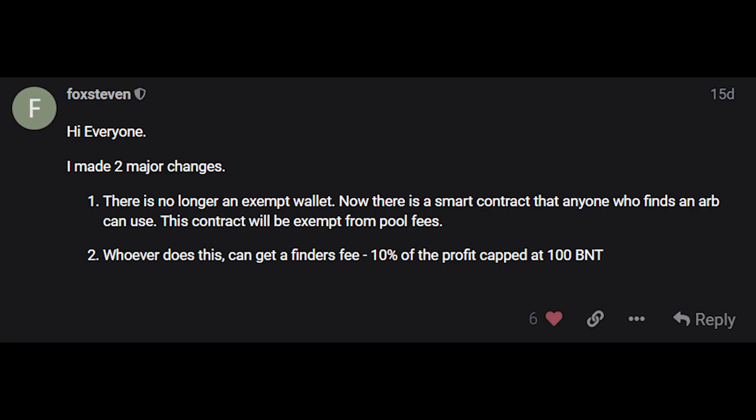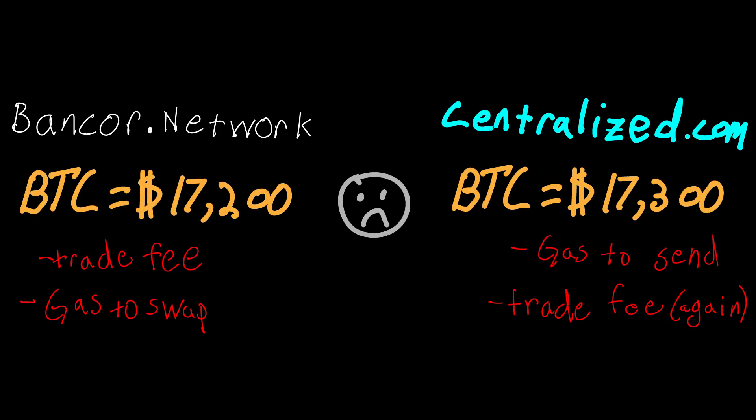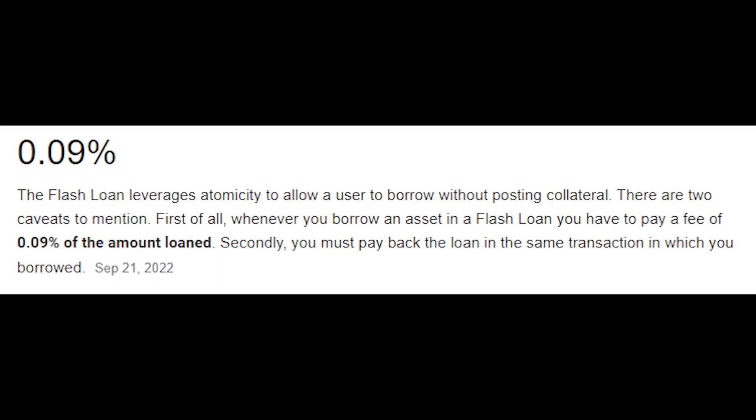Let's review. Arbitrage happens all the time, and the main things that get in the way of making money on ARBs are: 1. Trade fees — arbitrage bots have to wait until there is a large enough price discrepancy between markets before the trades are profitable; the higher the trade fee, the more they have to wait. 2. Startup capital — the margins on ARBs are usually so small that you need millions of dollars to make money on an ARB, so arbitrage bots use flash loans, which charge a fee that cuts into the profits.